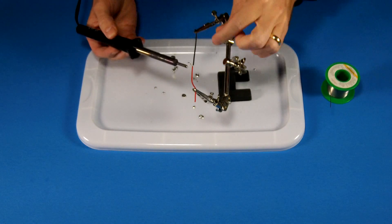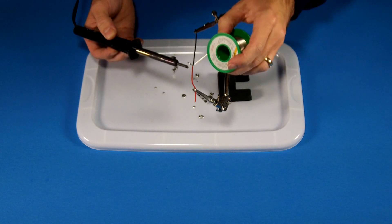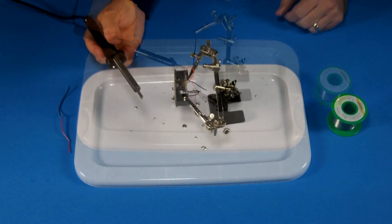Just remember, heat the bottom of the conductor. Apply your solder into the top and it will just absorb right in.